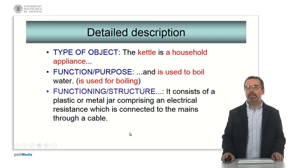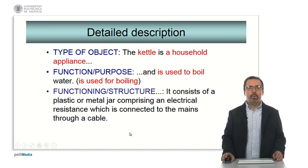Here we have a typical example. The kettle is a household appliance, this is a general noun to express it. And it's used to boil water, it's used for boiling water. And then a more detailed description would follow. It consists of a plastic or metal jar comprising an electrical resistance, which is connected to the mains through a cable.